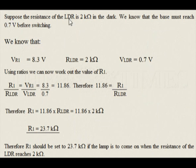Suppose the resistance of the LDR is 2 kOhms in the dark. We know that the base must reach 0.7 volts before switching. We know that VR1 equals 8.3 volts, RLDR equals 2 kOhms, and VLDR equals 0.7 volts.